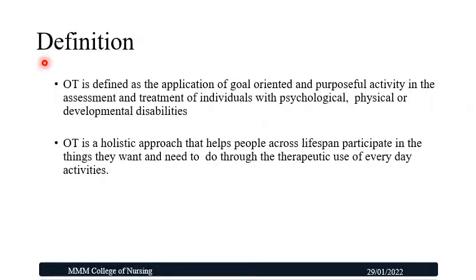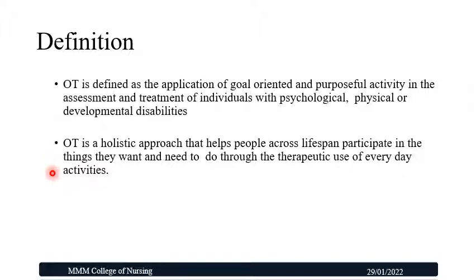How do you define occupational therapy? Occupational therapy is defined as the application of goal-oriented and purposeful activity in the assessment and treatment of individuals with psychological, physical, or developmental disabilities. Another definition: OT is a holistic approach that helps people across the lifespan participate in the things they want and need to do through the therapeutic use of everyday activities.